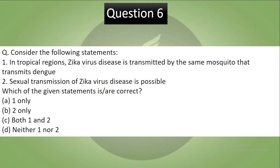Question 6: Consider the following statements. In the tropical region, Zika virus disease is transmitted by the same mosquito that transmits dengue. Sexual transmission of Zika virus disease is possible. Which of the given statements is correct? Pause the video and try to answer. This was a factual question and your correct answer is both 1 and 2 — both are correct.